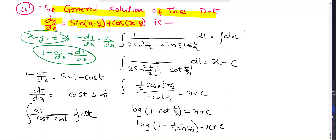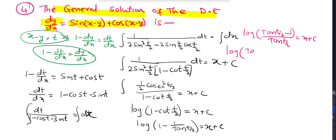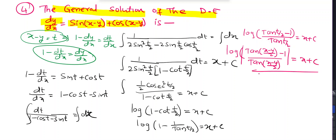Therefore log|tan(t/2)| - 1/tan(t/2) = x + C. Substituting t = x - y: log|tan((x-y)/2)| - 1/tan((x-y)/2) = x + C. This is the required answer.